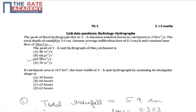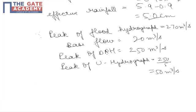Now, we know that to obtain direct runoff hydrograph or DRH, we subtract base flow from flood hydrograph. So, peak of DRH, that is direct runoff hydrograph, will be 270 minus 20, that is 250 m³ per second.